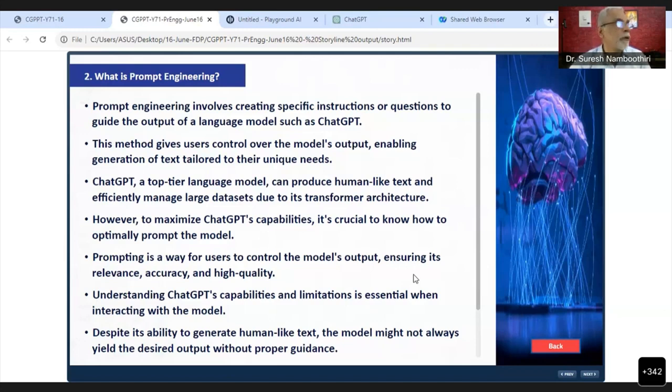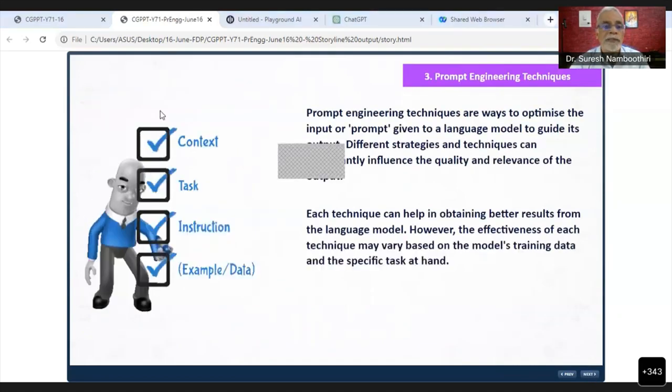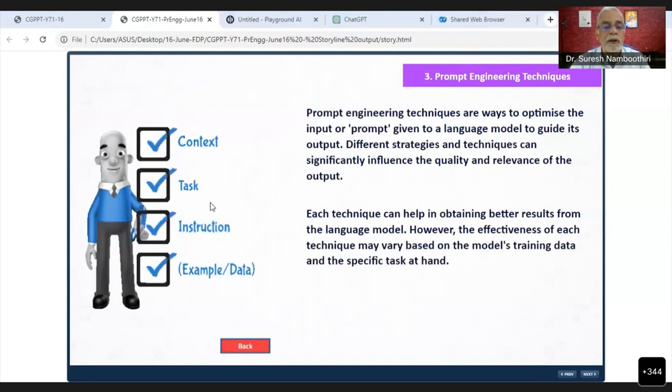This is the magical structure of any prompt: it will have a context, a task, an instruction, and an example or data. These three or four elements are based on the situation—we can even miss some—but this is a complete prompt: context, task, instruction, example data.